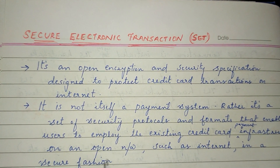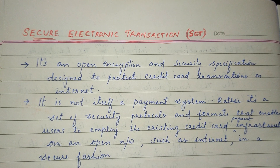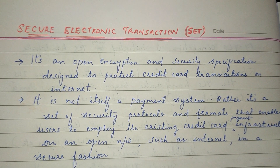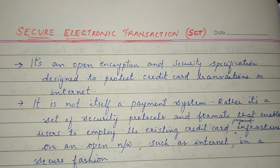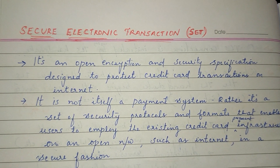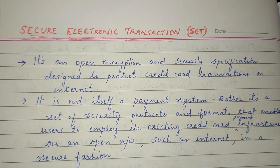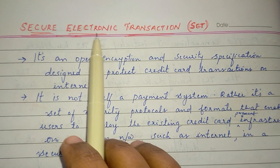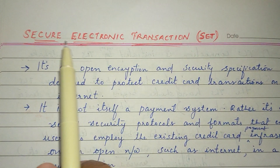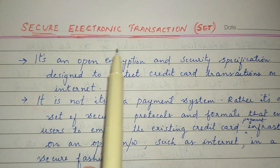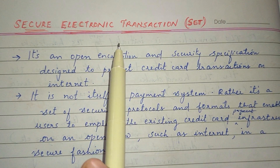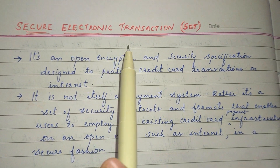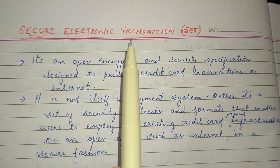Now we have to use the credit card. If we use the credit card, it will be secure. Now, we have to design that. This is a credit card transaction. This is a security specification. This is SET. This is not a payment assistance.